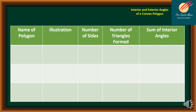Before we proceed to our topic today, let's try this little experiment. We have the name of polygon, the illustration, the number of sides, number of triangles formed, and the sum of interior angles. Let's consider the triangle — this is our illustration and we have three sides.